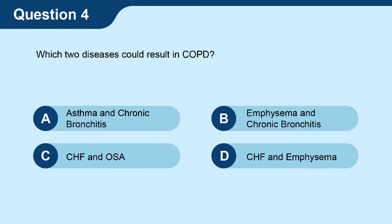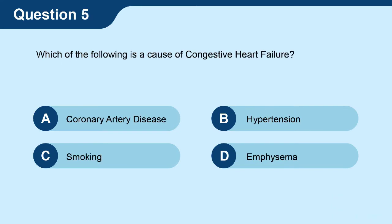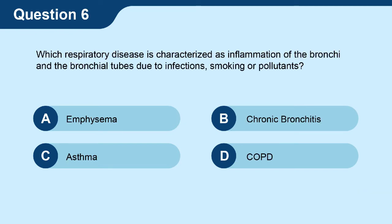Question four: which two diseases could result in COPD? Question five: which of the following is a cause of congestive heart failure? Question six: which respiratory disease is characterized as inflammation of the bronchi and the bronchial tubes due to infections, smoking, or pollutants?